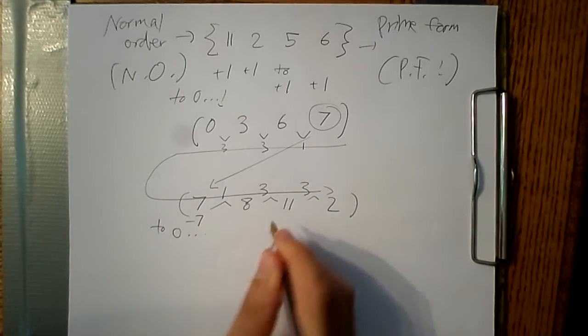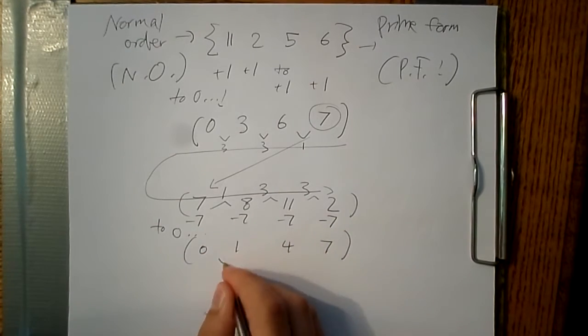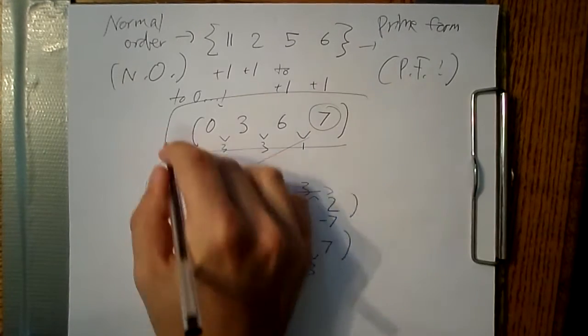Well, let's transpose that to zero as well. And here we go. These are the two contenders for our prime form, the normal order and its inversion starting from zero.